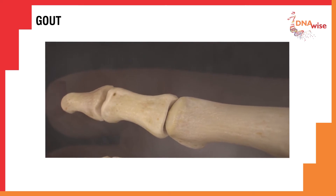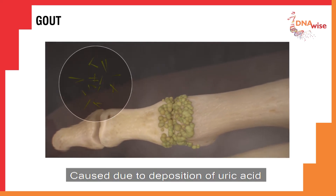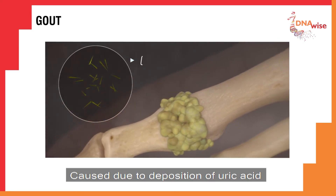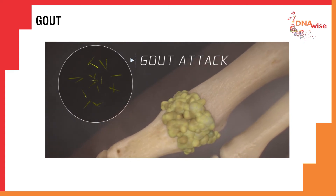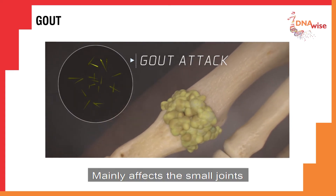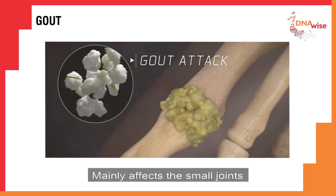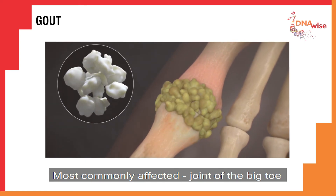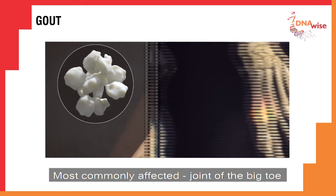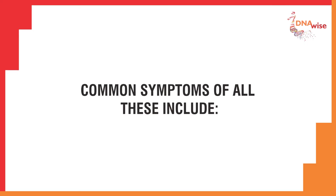Gout is a condition caused due to deposition of uric acid in the joint spaces. It mainly affects the small joints, and the most commonly affected joint is the joint of the big toe.